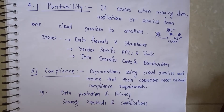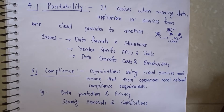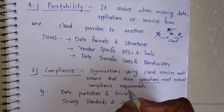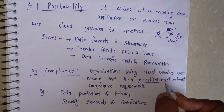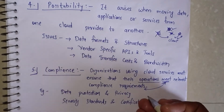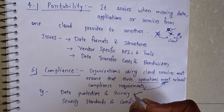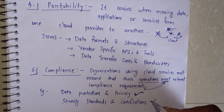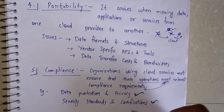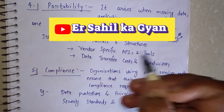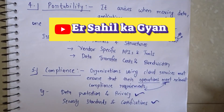The fifth and final issue is compliance. Compliance is like a discipline for organizations using cloud services. They must ensure that whatever service they are delivering meets the compliance requirements. For example, data protection and privacy are important — data should not be leaked. Second, security standards and certifications should be present so that any client choosing a provider can see what security levels, standards, and certificates they have for securing their data. That covers all five legal issues. Thank you for watching — if you loved it, like and share with your friends.